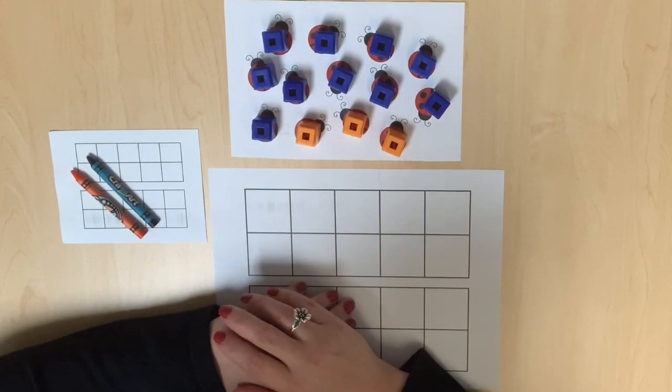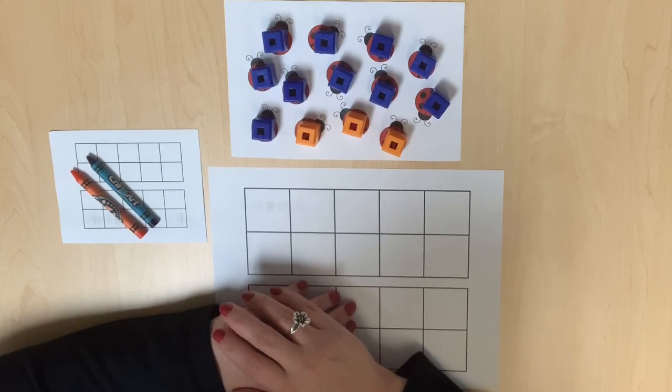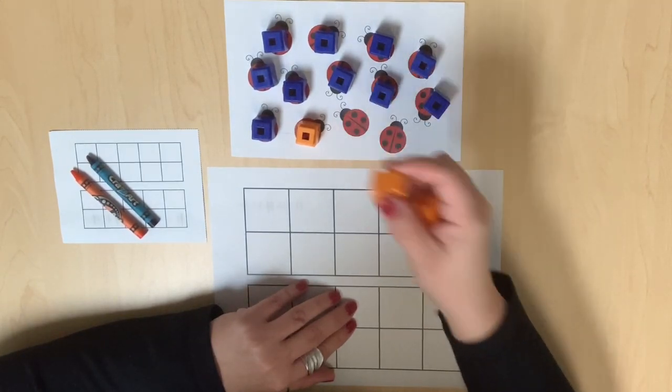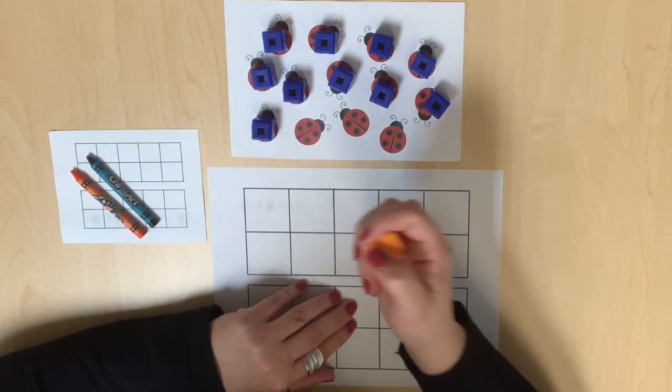Also remove each object one at a time to practice counting backward by ones: 13, 12, 11, 10, etc.